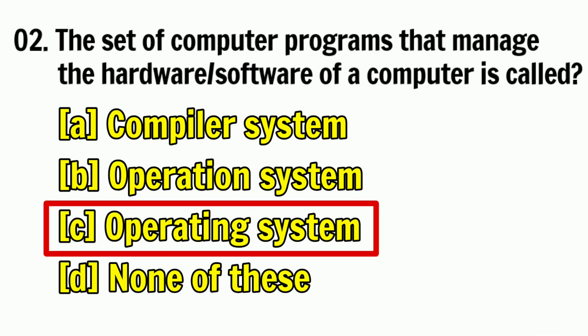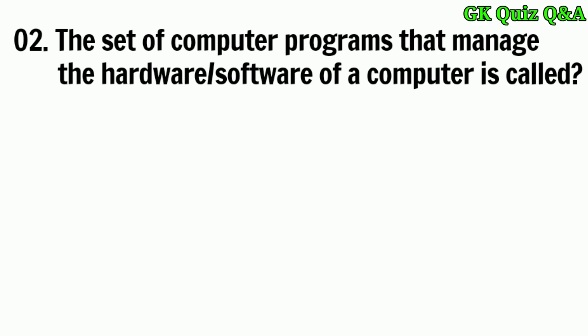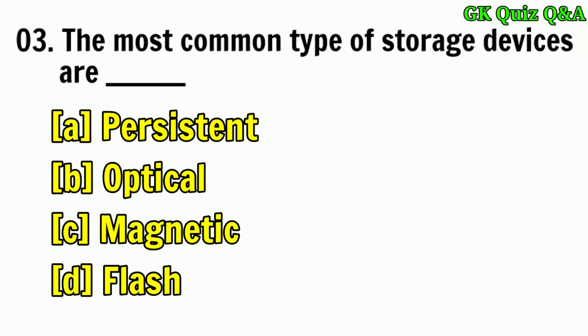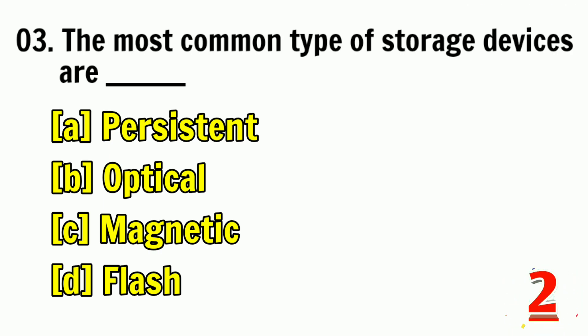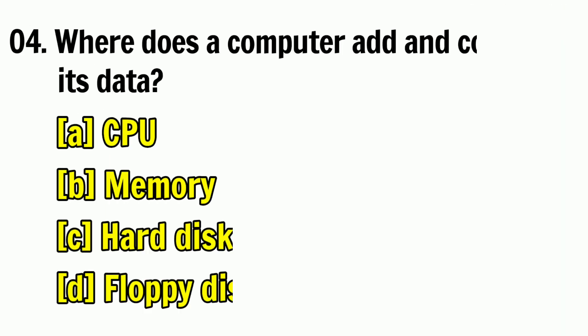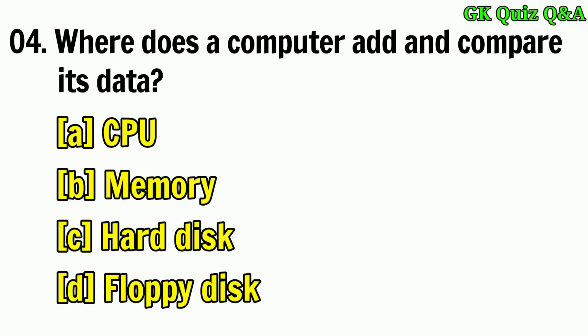Answer C: Operating System. The most common type of storage devices are — Answer C: Magnetic. Where does a computer add and compare its data?